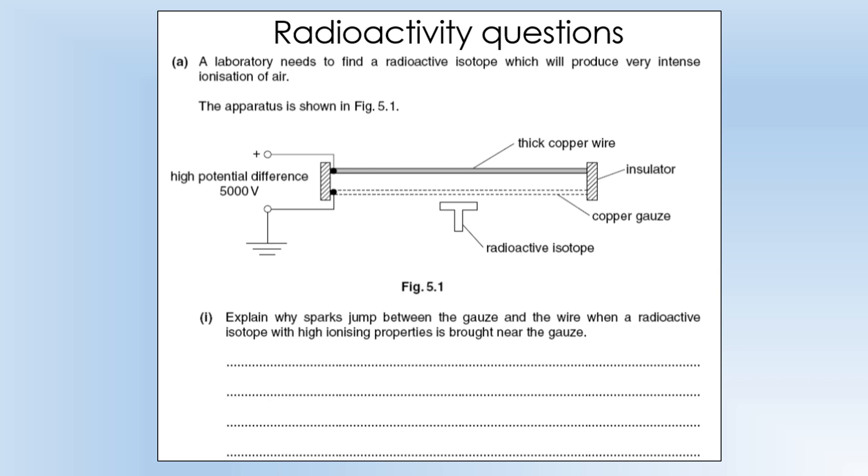In this video we're going to be looking at some questions on radioactivity, looking at alpha, beta, gamma sources and some of the different uses of them. The first thing we're going to look at is some equipment that ionizes air and we use that ionized air to produce sparks.